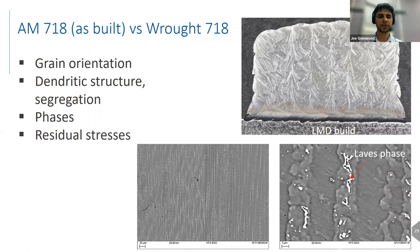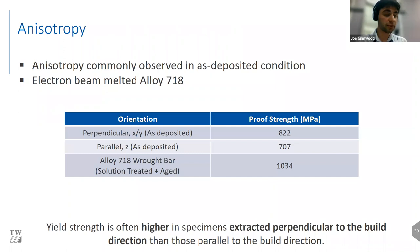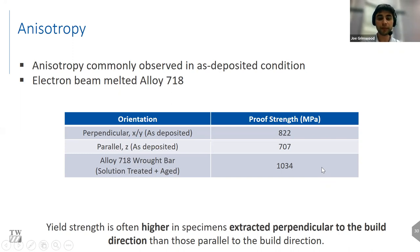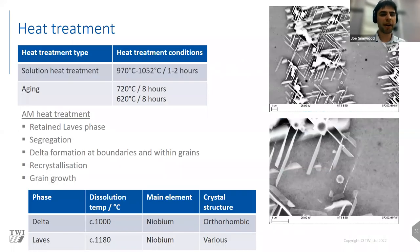Comparing AM parts to wrought parts: the grain orientation in the as-built condition from an LMD build is very different to the nice equiaxed fine grain structure we typically get from a well heat-treated 718 plate or bar. Dendritic structures form which can lead to segregation, variations in strength, and less desirable phases. This raises the question of how to make AM parts more like wrought material, which requires applying heat treatments. There is also a driving force to use parts without heat treatment if possible, though in lots of applications that isn't possible.